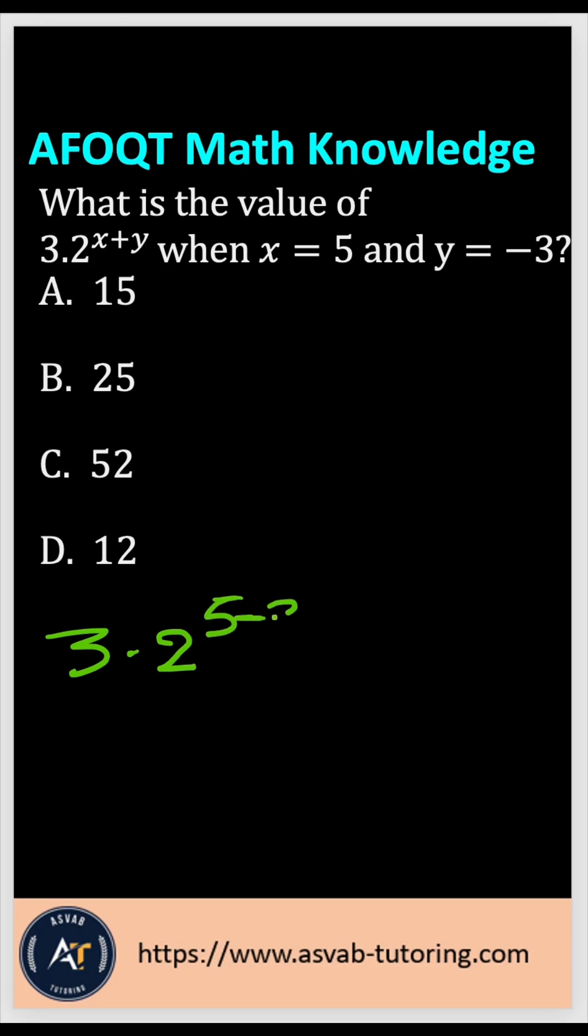...5 minus 3, right? That gives you 3 times 2 to the power 2, since 5 minus 3 is 2. So now let's apply the rule, the exponent first. 2 times 2 is 4, so 3 times 4...